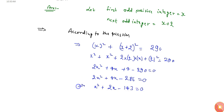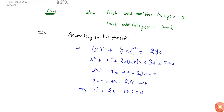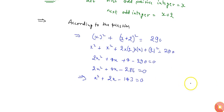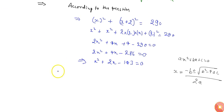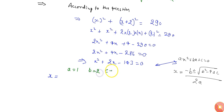Dividing through by 2, I get x squared plus 2x minus 143 equals zero. To find the value of x, I shall use the quadratic formula: if ax squared plus bx plus c equals zero, then x equals minus b plus or minus square root of b squared minus 4ac, all divided by 2a. Comparing, the value of a is 1, b is 2, and c is minus 143.